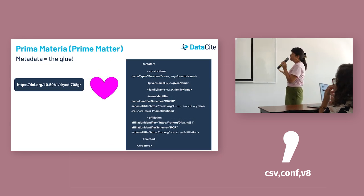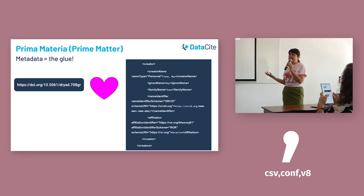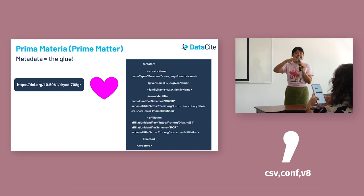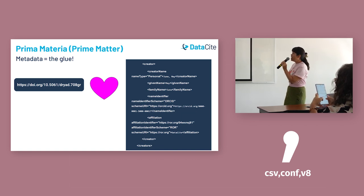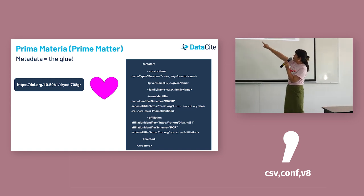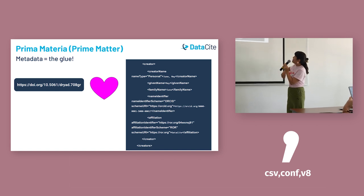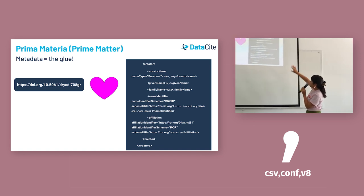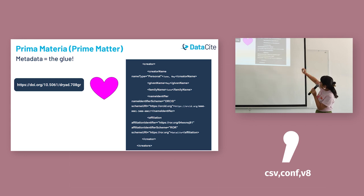Continuing with the alchemy thread, what is the prime matter — the starting point for the alchemical transformation? That is metadata. Every DOI identifier is associated with a metadata record. In this case, it's metadata about the creator of the data set — you can see the name, last name, ORCID ID, and affiliation with a ROR identifier.